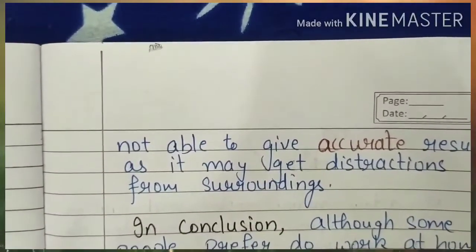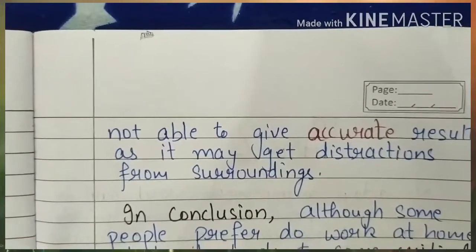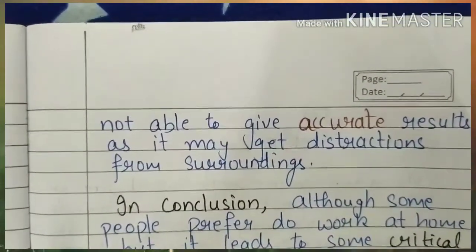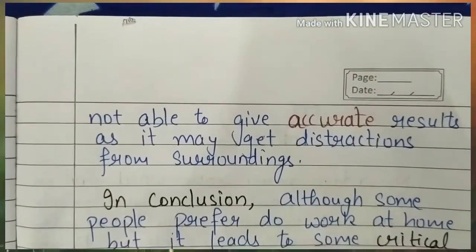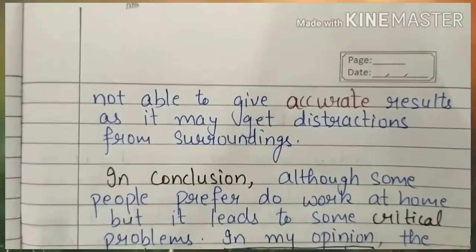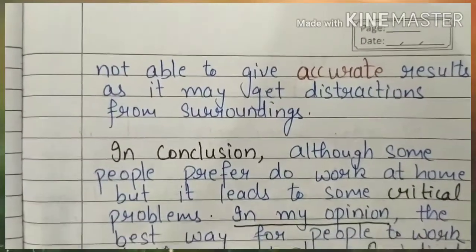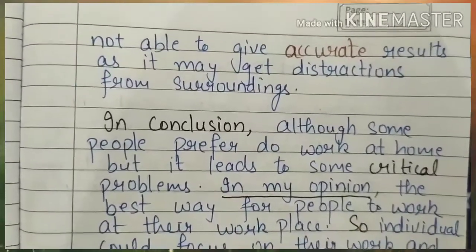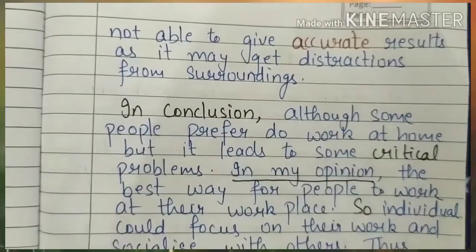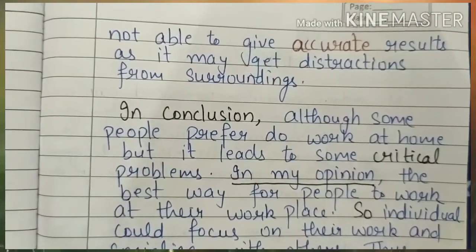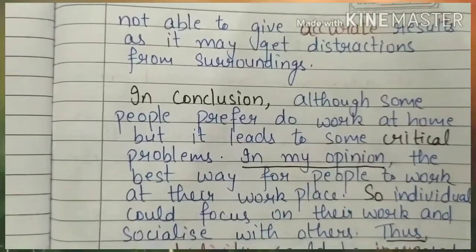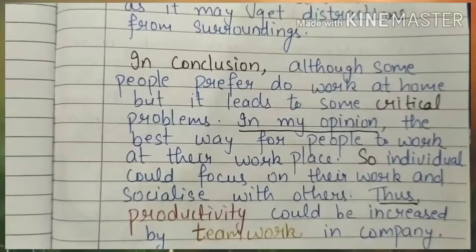Now let's write the conclusion. In Task 2, in the conclusion you must not leave out everything from paragraph 1 and paragraph 2 — and the statement asked for your opinion too. So in the conclusion: 'Although some people prefer to work at home, it leads to some critical problems. In my opinion, the best way for people is to do their work at their workplace, so individuals can focus on their work and socialize with others.' Thus, productivity could be increased by teamwork in a company.